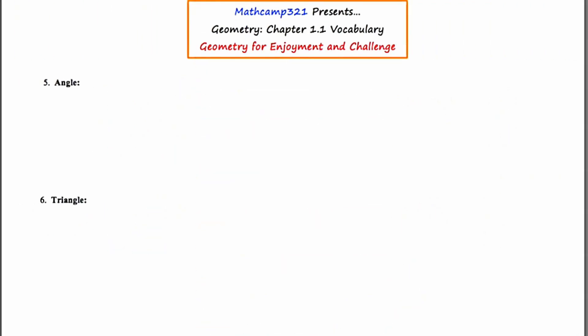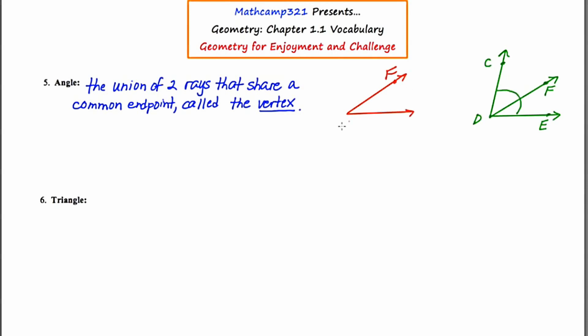So our last definition was for a ray, and now we're going to be discussing an angle. An angle is the union of two rays that share a common endpoint called the vertex. I'm going to draw a couple of examples of angles. Okay, so I've drawn two examples of angles, one in red and one in green.